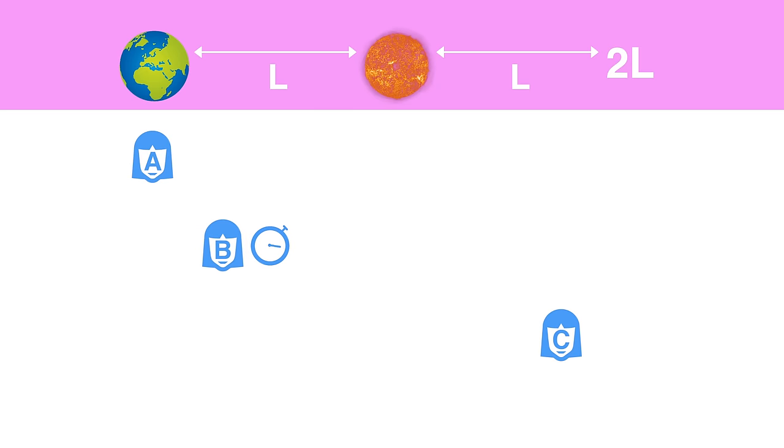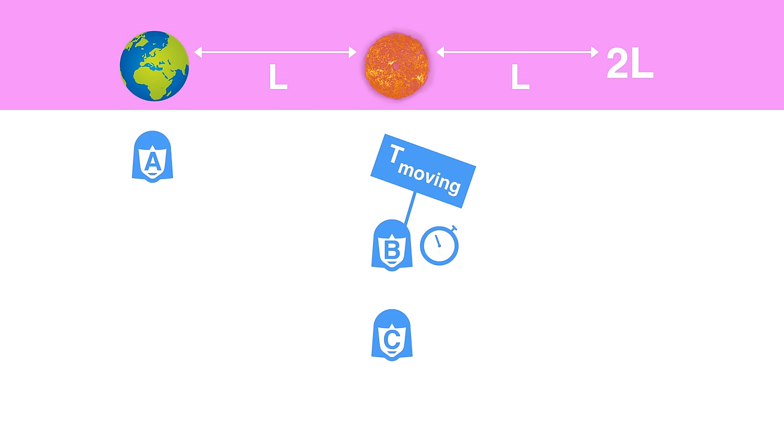So when Observer B passes Observer A, they start a stopwatch. When they get to the distant star, they stop the stopwatch and hold up a huge sign that displays the time they experienced on the outward journey. The sign is big enough that Observer C can see it as they pass by on their way back to Earth. Observer C writes down that number, and we'll call that T moving.